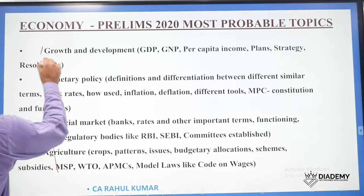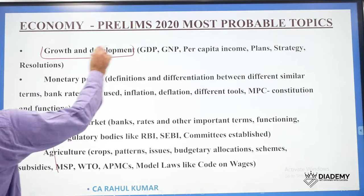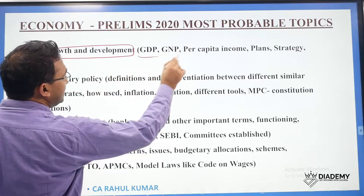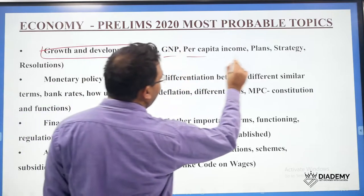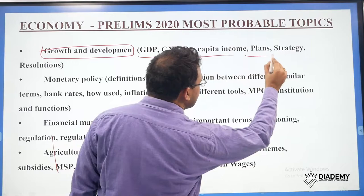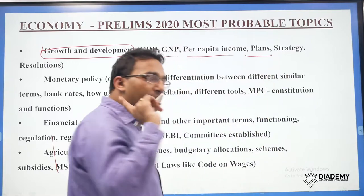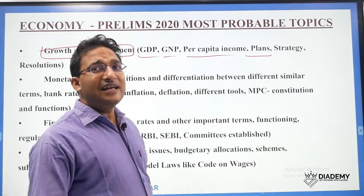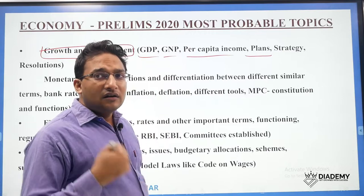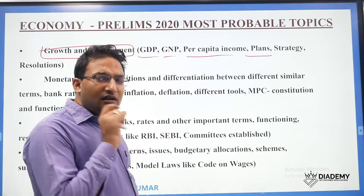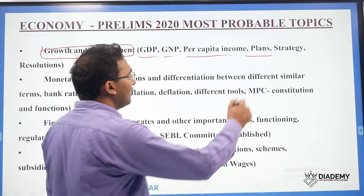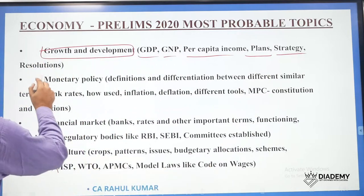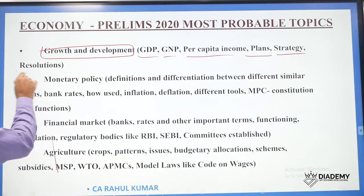Growth and development is very important. Concepts like gross domestic product, GNP, and per capita income are key areas. Five-Year Plans are relevant even though NITI Aayog is there — the UPSC is still interested in knowing about the final plans, the NITI Aayog strategy, and different resolutions related to planning.